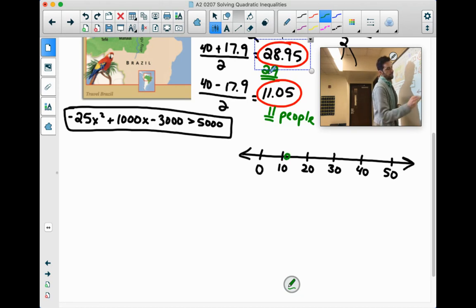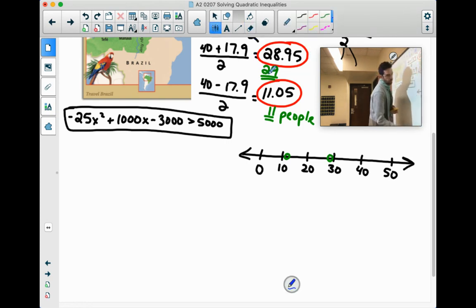So 11 is here-ish. 29 is there-ish. But that's okay. We're going to look at three different chunks of this graph.